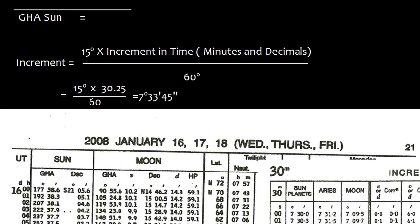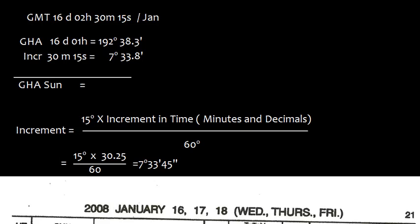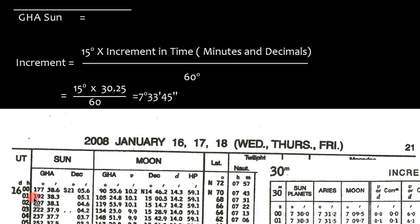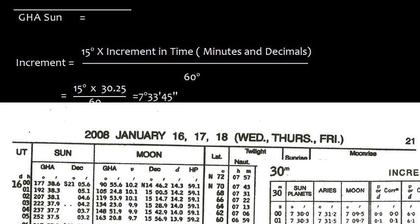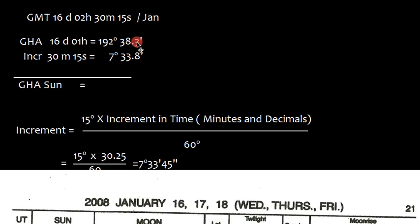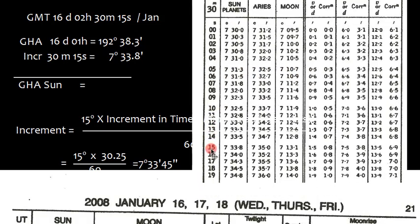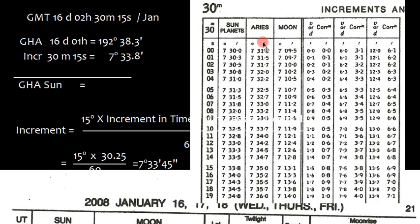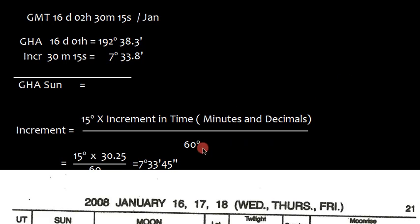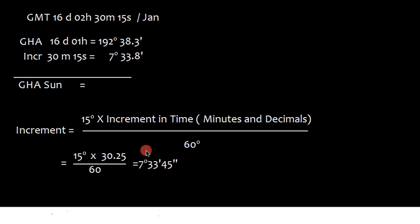What value we have taken? 16 day 01 hour. GHA sun is 192 degrees 38.3 minutes. In the table for 30 minutes and 15 seconds, come here the table 30 minutes and 15 seconds, let's look at the column of sun and planet. We find 7 degrees 33.8 minutes. We can take from the increment table or we can also find from the formula. It will not make much difference.